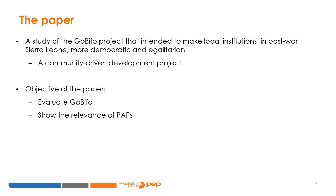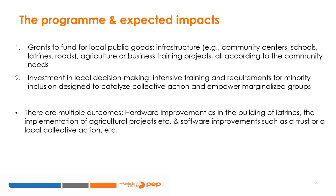Many development projects also aim to build and strengthen social organizations, with the objective of making the impact sustainable, so that once the program ends, beneficiaries have the capacity to find and implement their own solutions. The study is an impact evaluation of the community-driven development project called GOPIFO implemented in Sierra Leone after the Civil War. There are two components to the program. The first takes the form of grants to fund local infrastructure development, such as community centers, schools, latrines or roads, or agriculture or business training projects, all according to community needs.